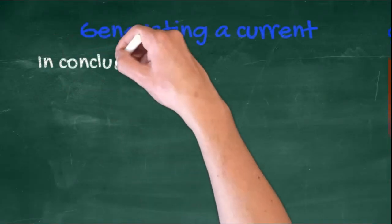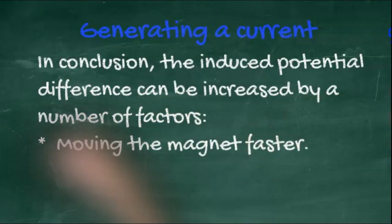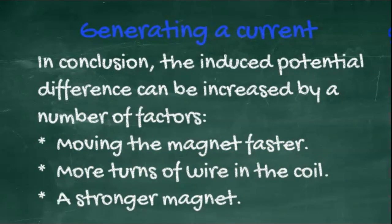In conclusion, the induced potential difference can be increased by a number of factors: moving the magnet faster, more turns of wire, and a stronger magnet.